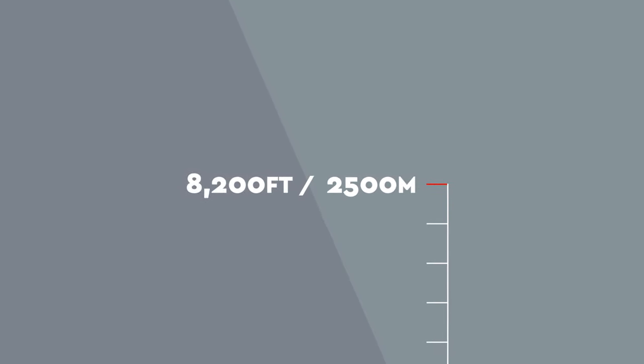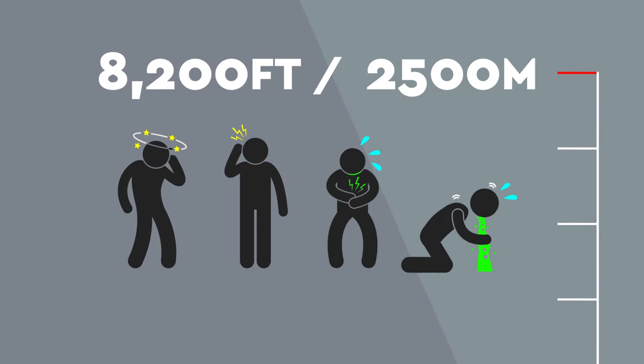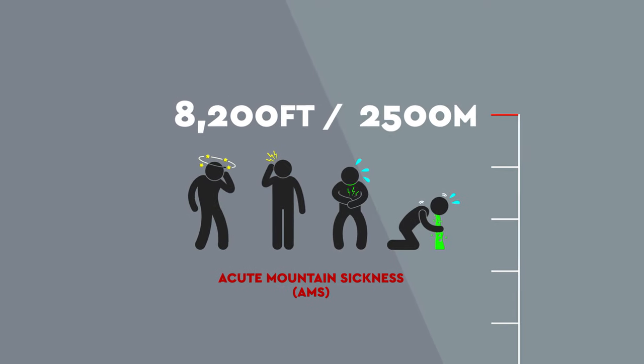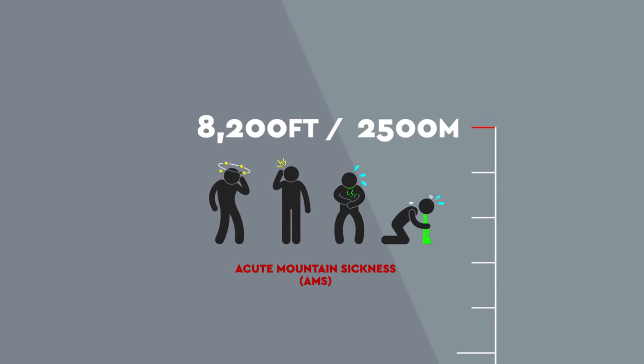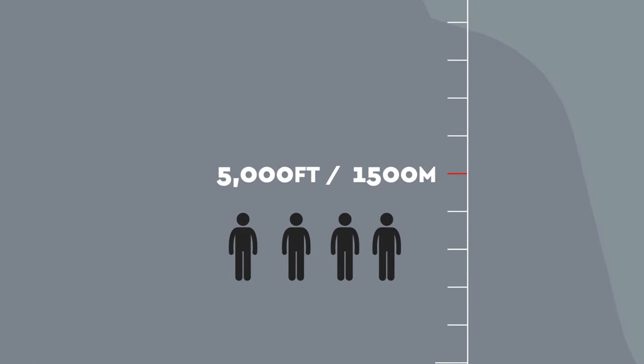At around 8,000 feet, 2,500 meters, these symptoms can progress to dizziness and headaches, leading to nausea or vomiting. These early forms of altitude sickness, dubbed acute mountain sickness, are not usually life-threatening, and will normally disappear as soon as you descend to a lower altitude.